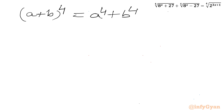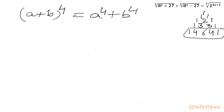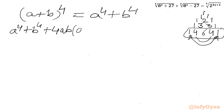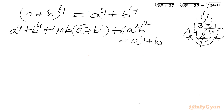I will use Pascal's triangle and binomial expansion to expand the left-hand side. The coefficients for power 4 are 1, 4, 6, 4, 1. Expanding (a+b)⁴ and writing the LHS equal to a⁴ + b⁴: we get a⁴ + 4ab(a² + b²) + 6a²b² + b⁴ = a⁴ + b⁴.